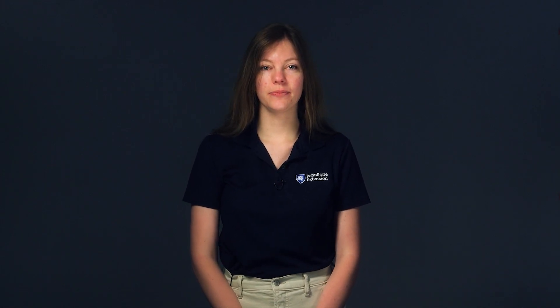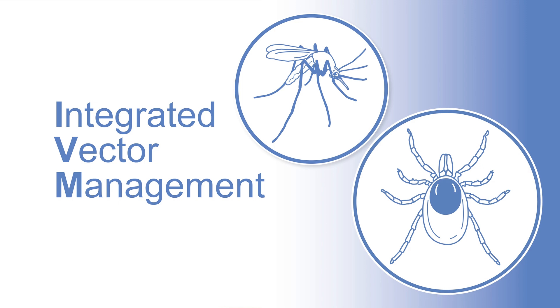Integrated vector management, known for short as IVM, is one strategy for controlling these vectors. You may be familiar with integrated pest management, also known as IPM. IPM programs combine multiple control tactics to manage pests in ways that are effective, environmentally friendly, and economical. IVM programs are similar but are directed specifically at vector control.